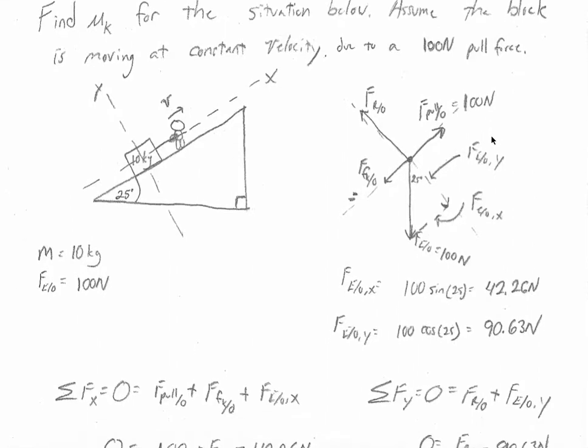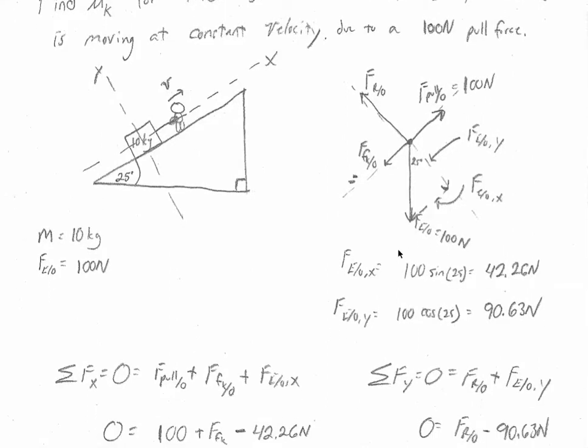So some simple calculations to get us started using the angle of 25 degrees. We can find the x component of the force of the earth on the object which is 100 sine 25 which is 42.26 newtons, and for the force of the earth on the object in the y direction we get 100 cosine 25 which is 90.63 newtons.